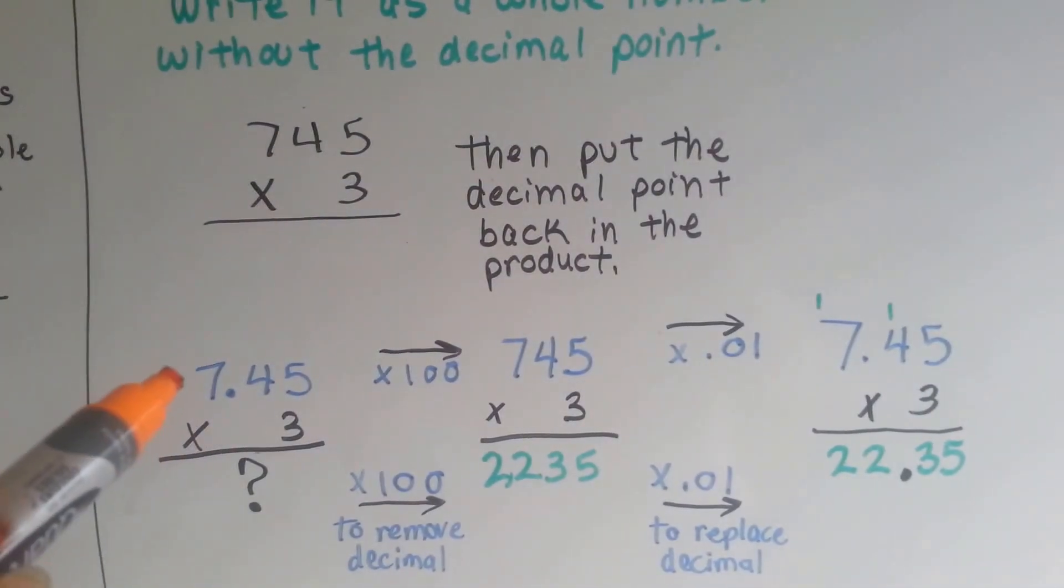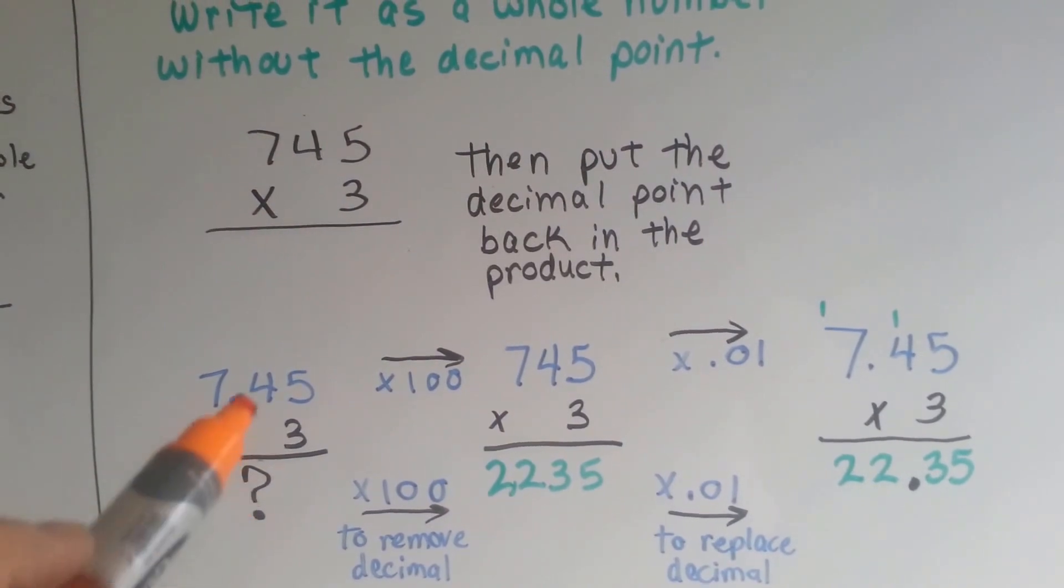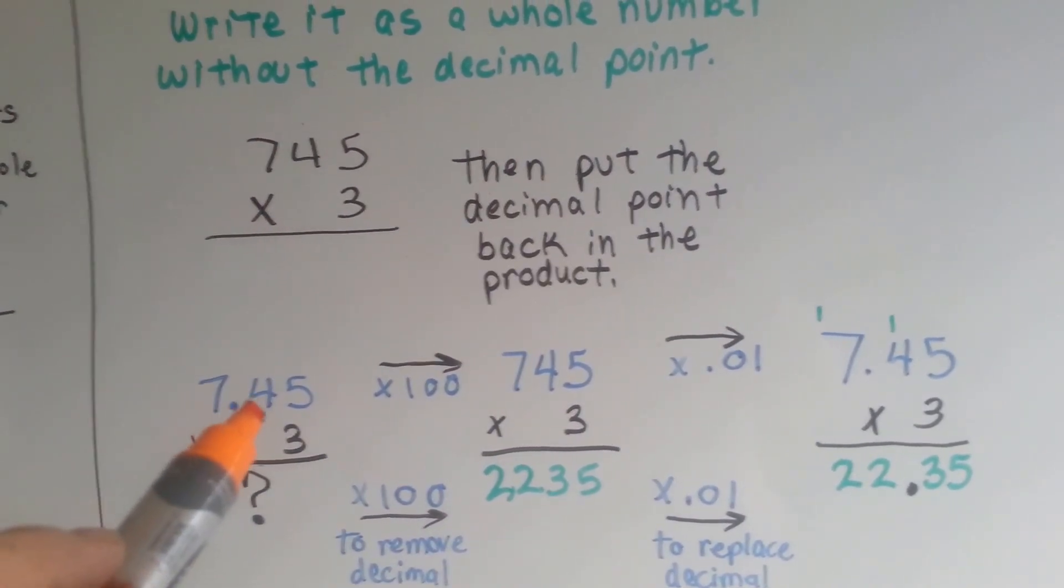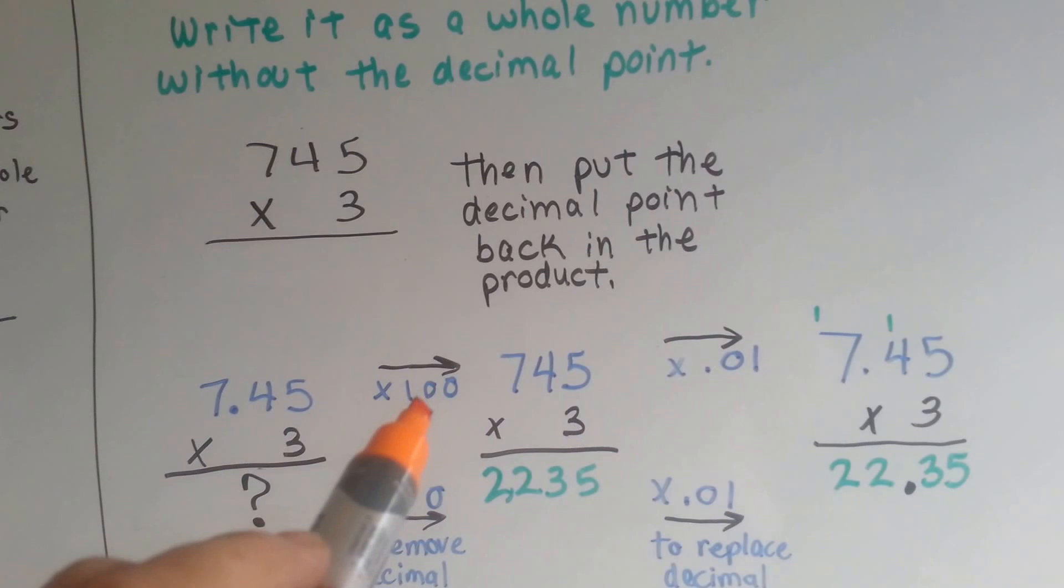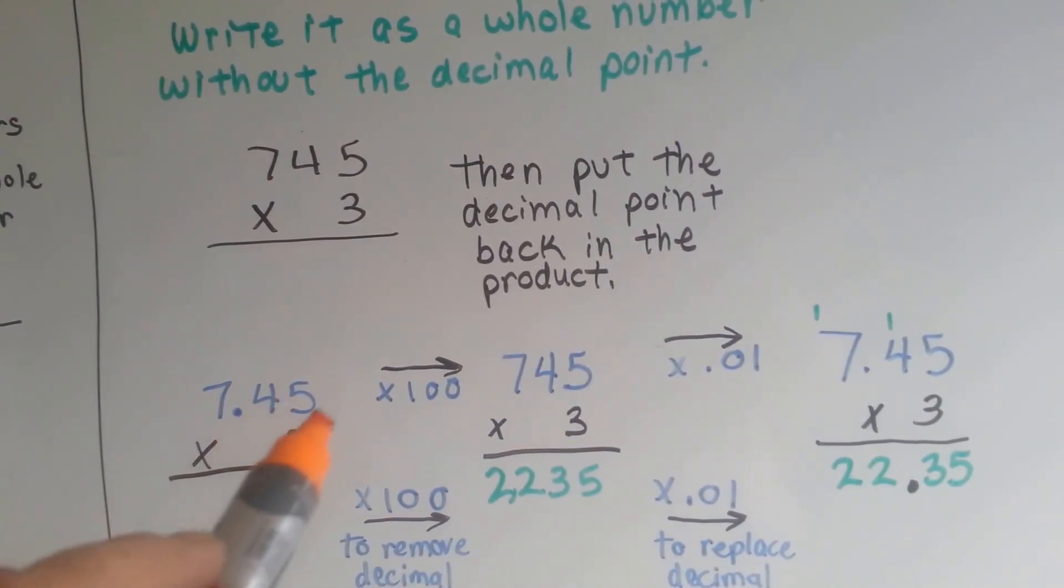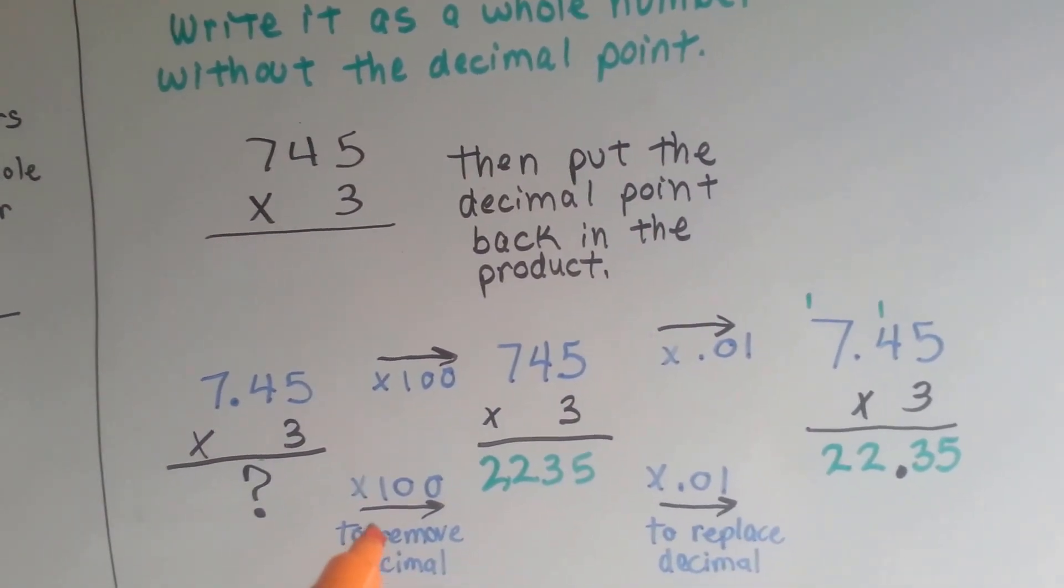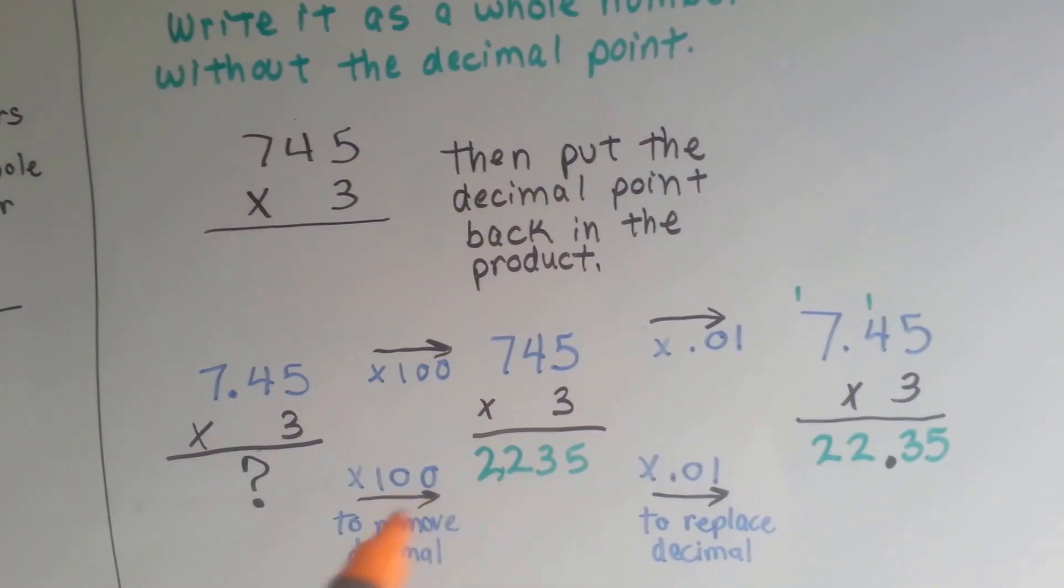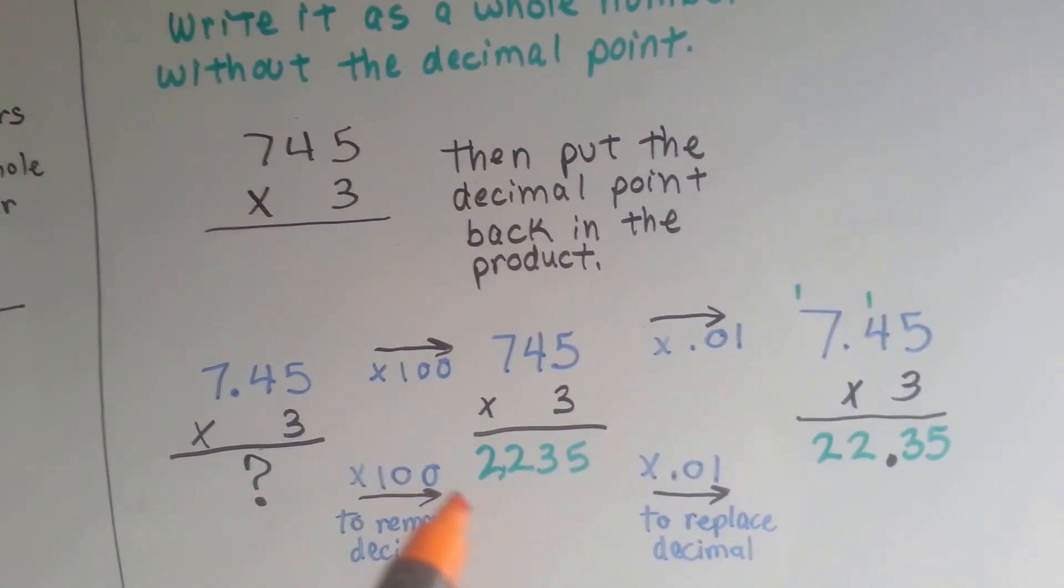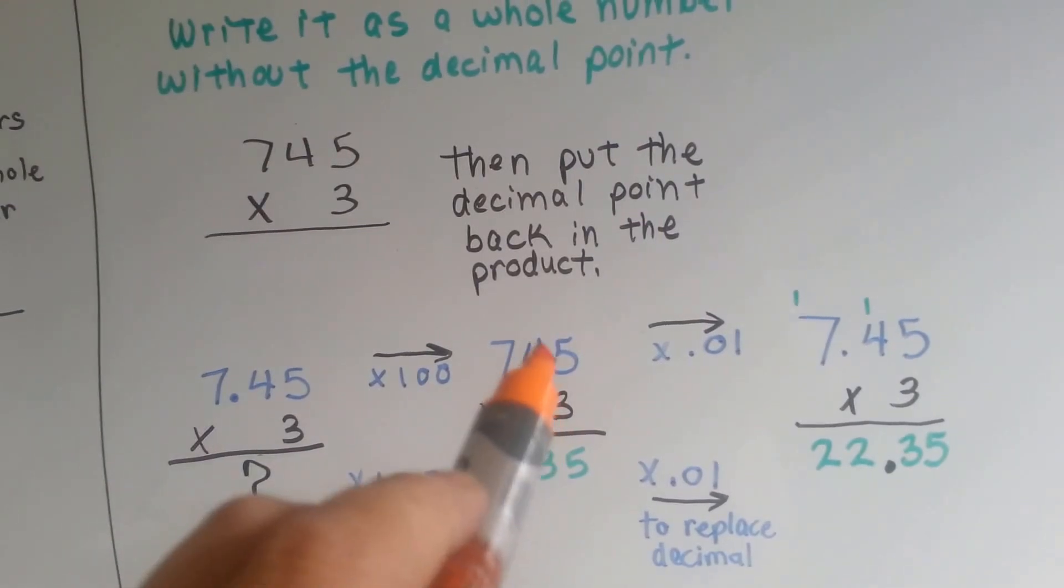This is how. If we had 7 and 45 hundredths times 3 and wanted to know the answer, we could just multiply the 7 and 45 hundredths times 100, and that would remove the decimal point, see? Because it would go boom, boom, and it would be gone. Then we could multiply, we could see that the answer would be the same thing multiplied by 100, and it would be removed. There would be no decimal point because it was none up here, see?